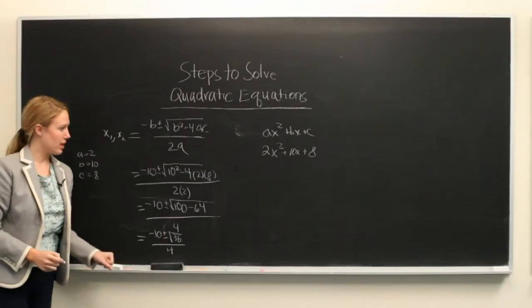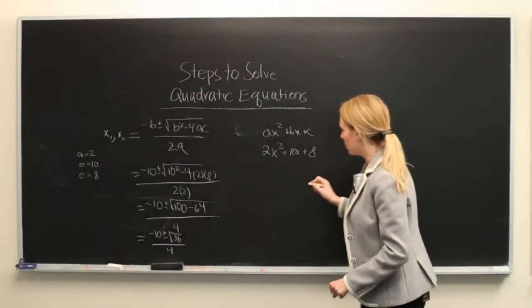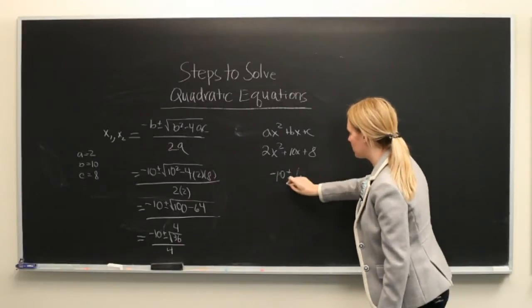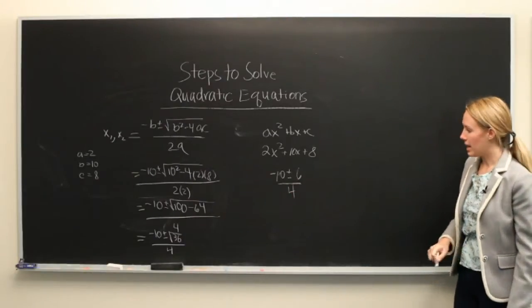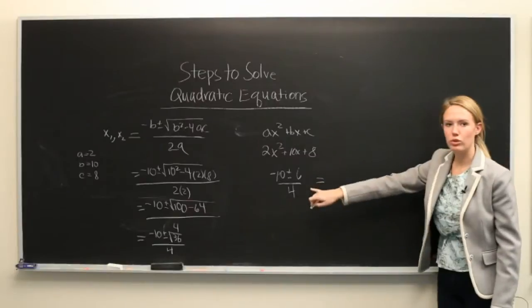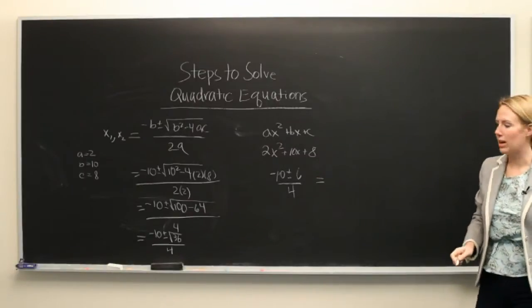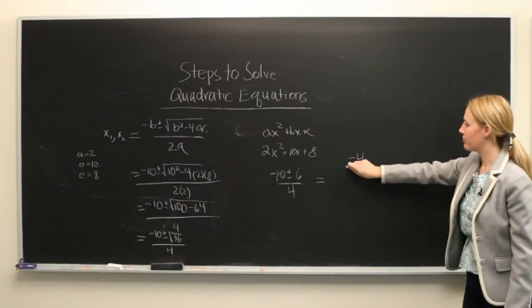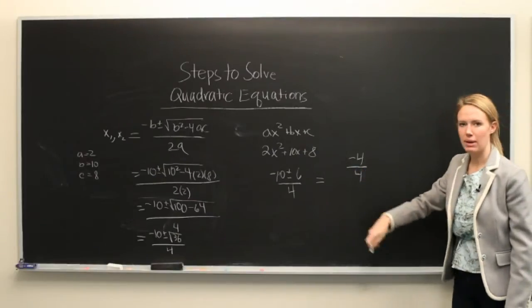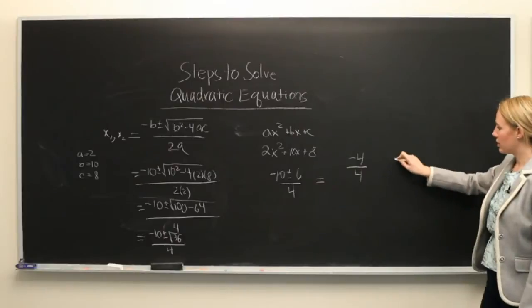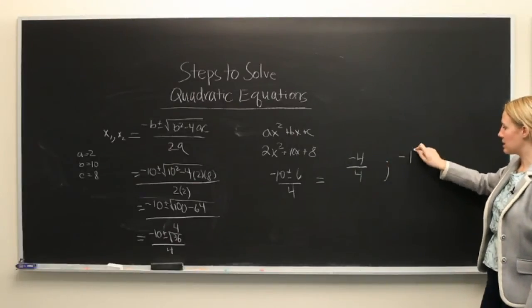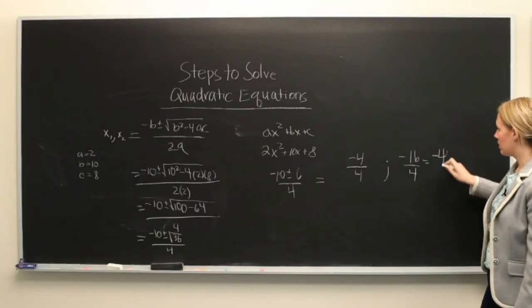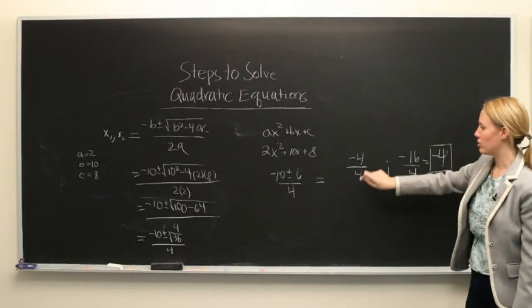So let's come over here and finish that. This is going to be equal to minus 10 plus or minus 6 divided by 4, and we realize that we need to do two separate operations to the top to get our two different values. So minus 10 plus 6 should be minus 4 divided by 4, and then minus 10 minus 6 will be minus 16 over 4, which is equal to minus 4, and we can reduce the first to minus 1.